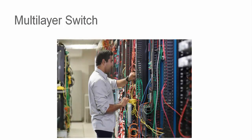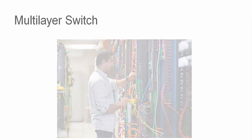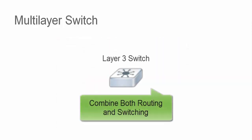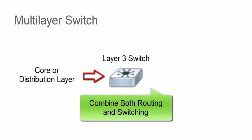As the enterprise infrastructure has evolved, so have Ethernet switches and routers. Multi-layer switches which combine both routing and switching functions have become increasingly popular. A multi-layer switch, commonly called a layer 3 switch, is a high performance solution that provides an ideal core or distribution layer function in the enterprise.